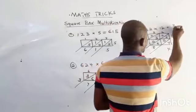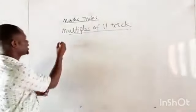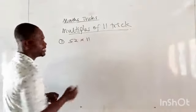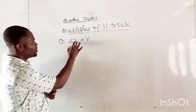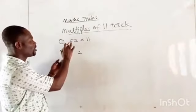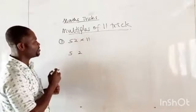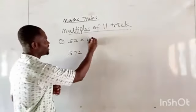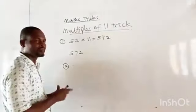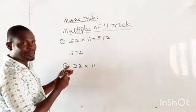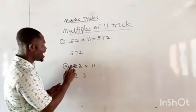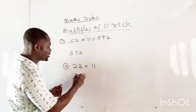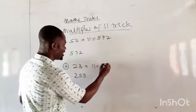Number 1: 52 times 11. First repeat the first digit 5, and repeat the last digit 2. Then add the two digits — 5 plus 2 gives you 7 — and put it in the middle. So the answer is 572. Number 2: 23 times 11. Repeat the first digit 2 and the last digit 3. Add 2 and 3 to get 5, put it in the middle — so the answer is 253.